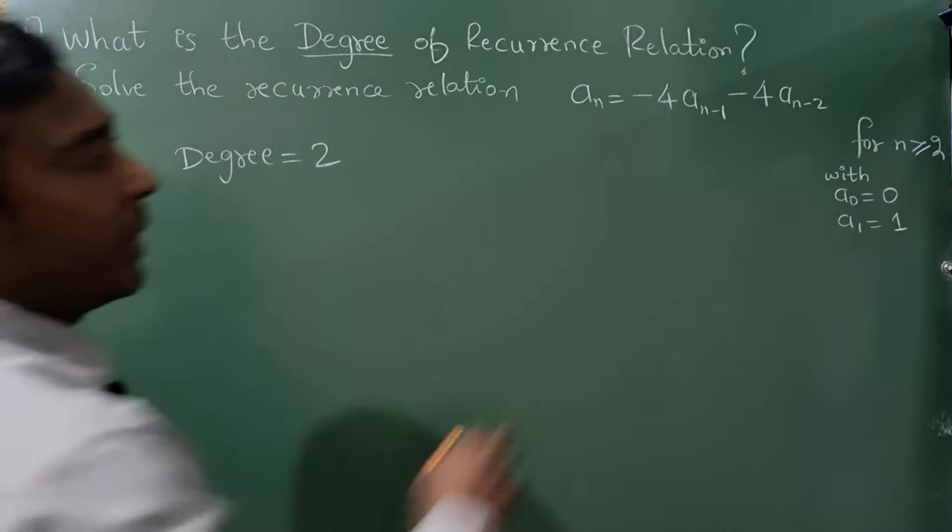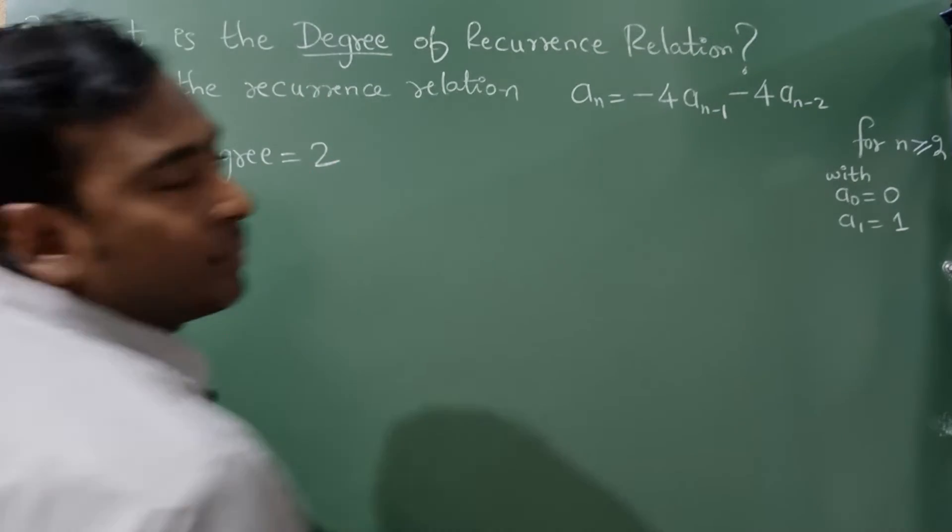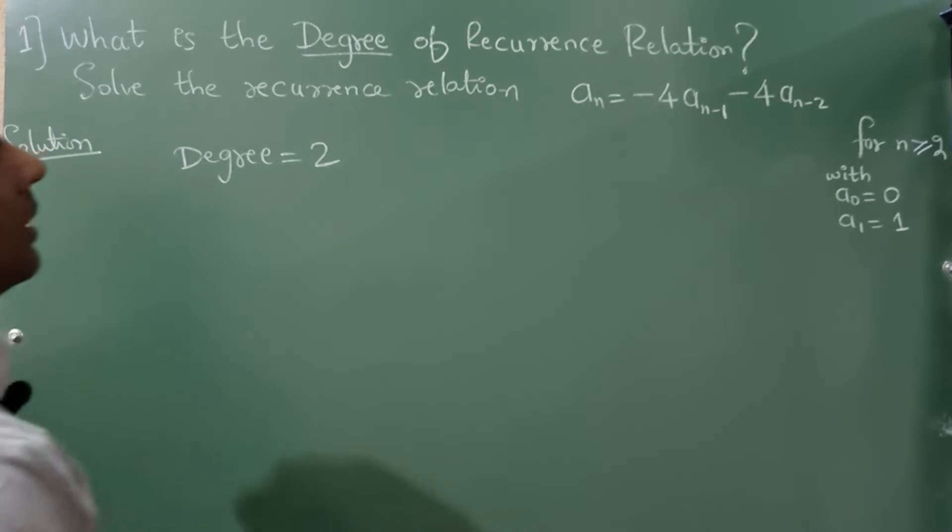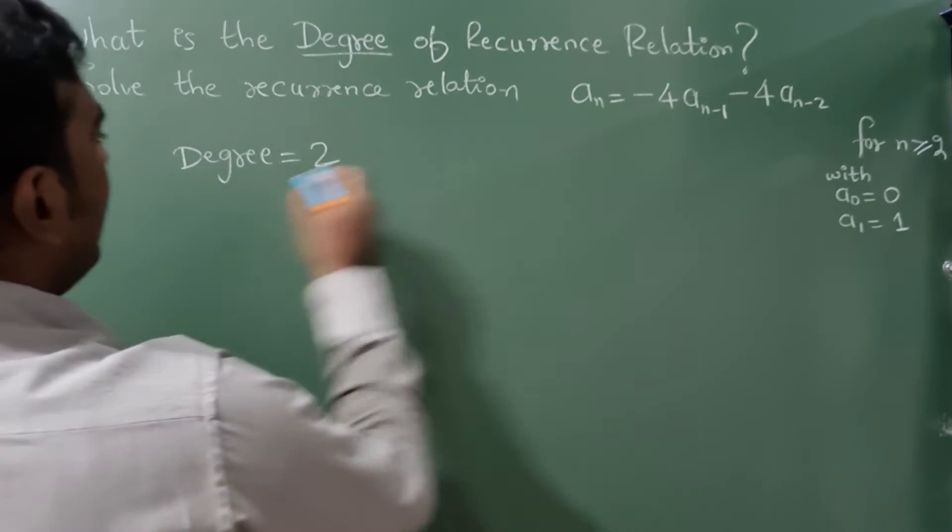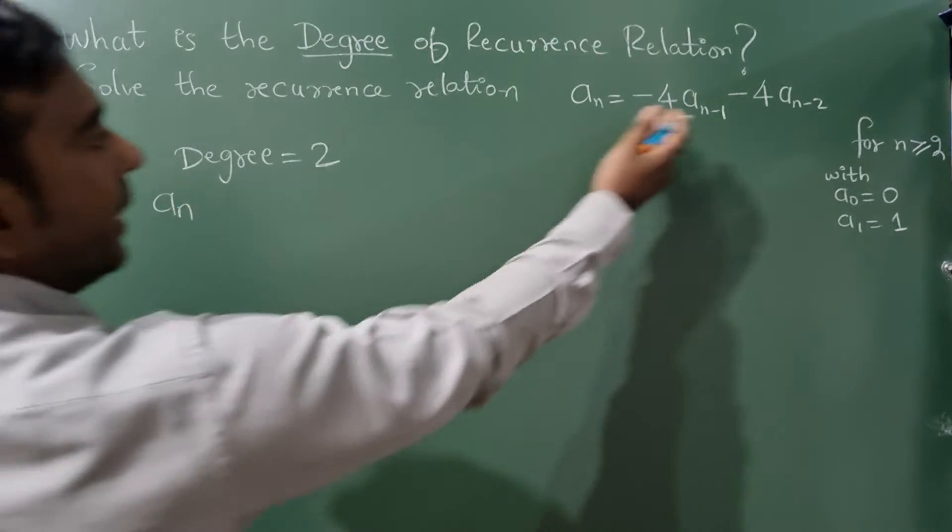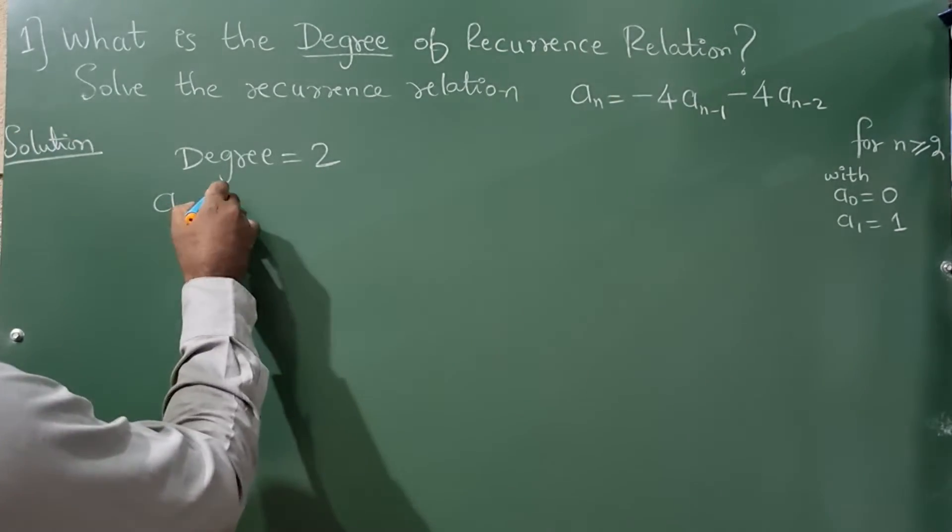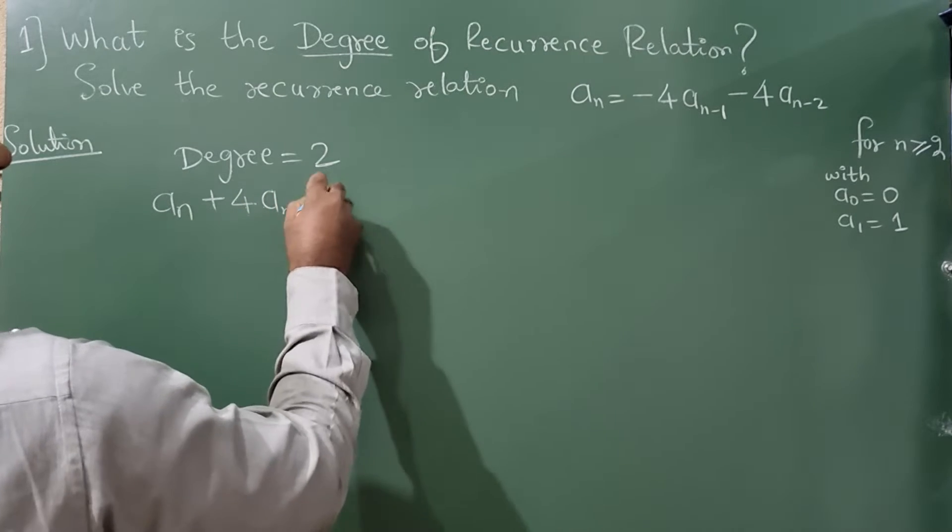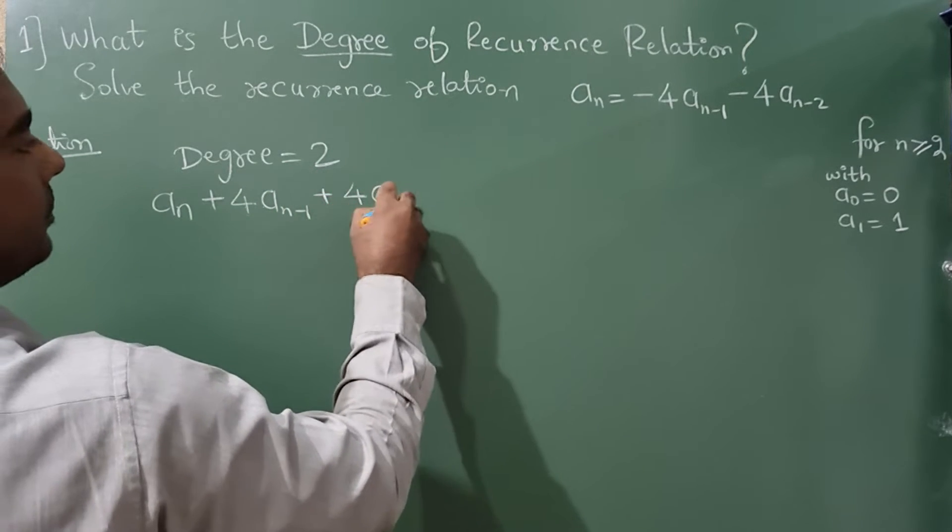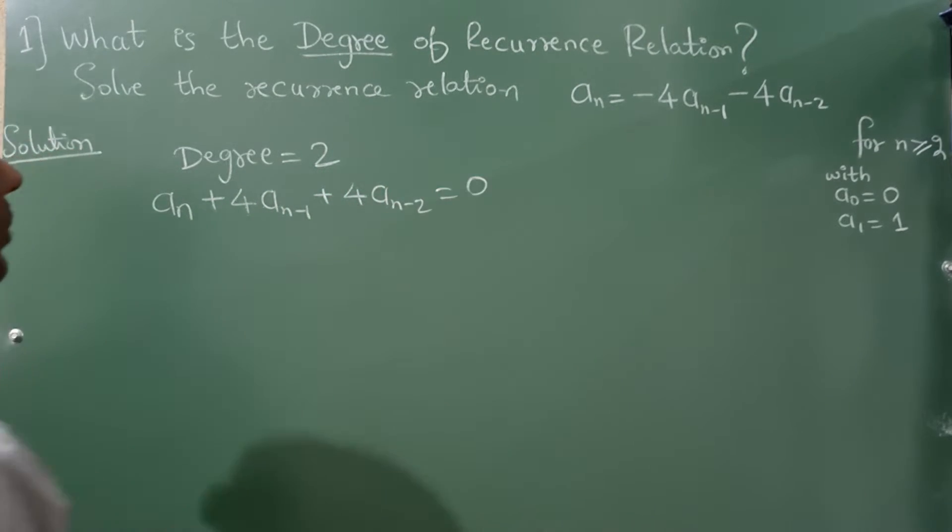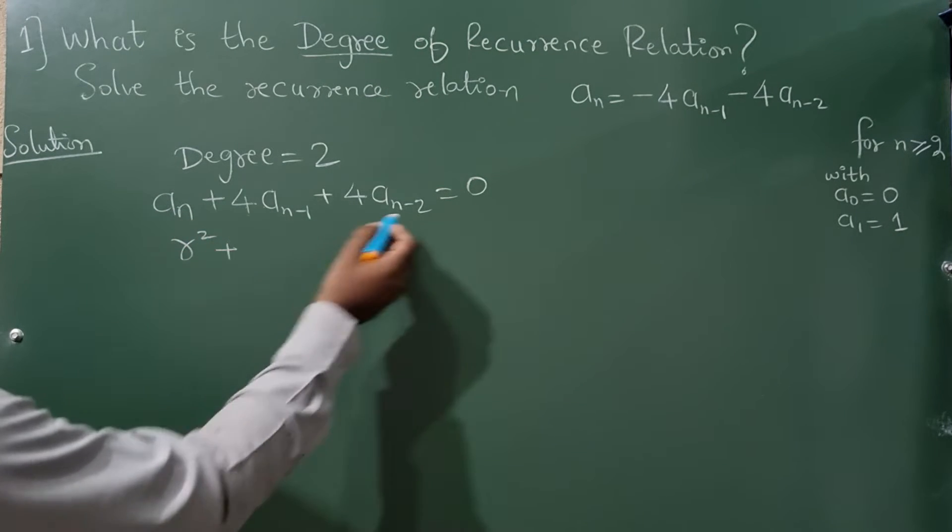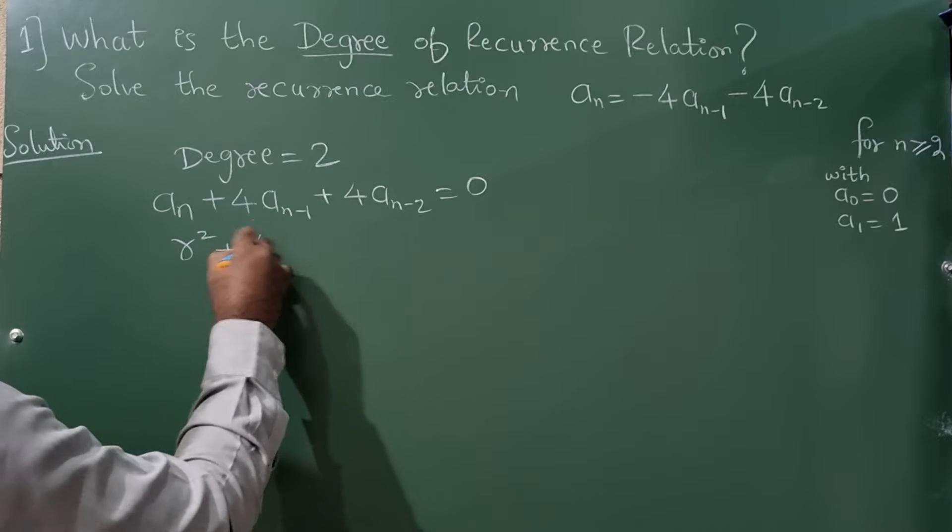Degree is 2 because there is n minus 2. Now let us solve this recurrence relation. So write here a_n, bring all the terms on the left hand side, it will become plus, again minus will become plus, is equal to 0. Now I will write r² because degree 2, plus 4r